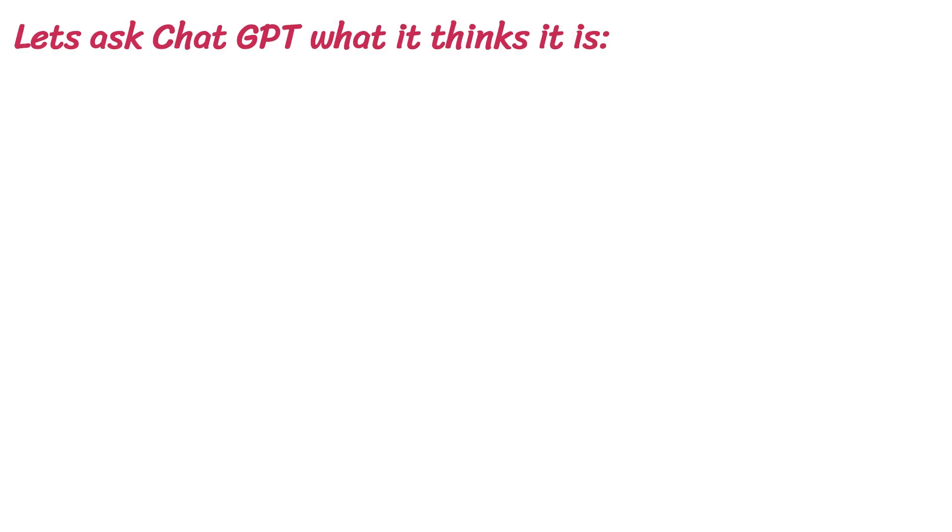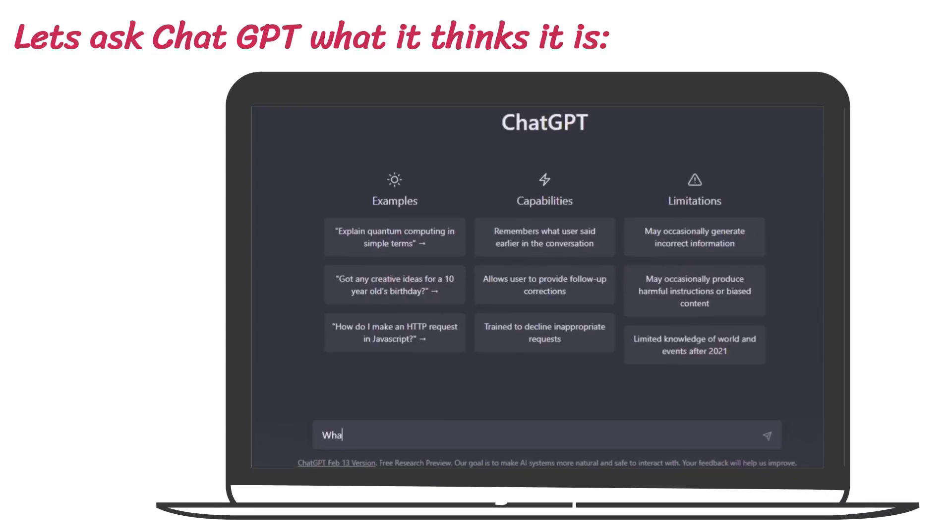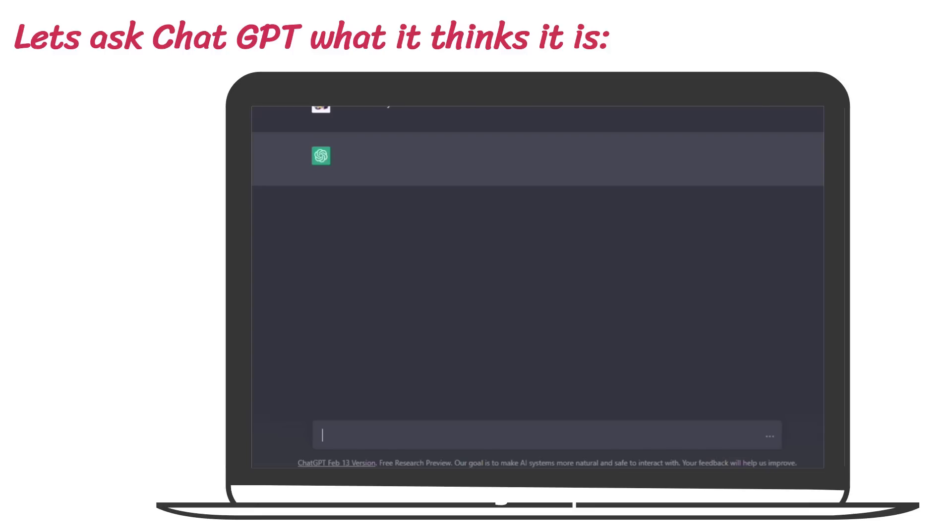Let's ask ChatGPT what it thinks it is. ChatGPT says, I am an AI language model created by OpenAI designed to respond to text-based inputs in a conversational manner.